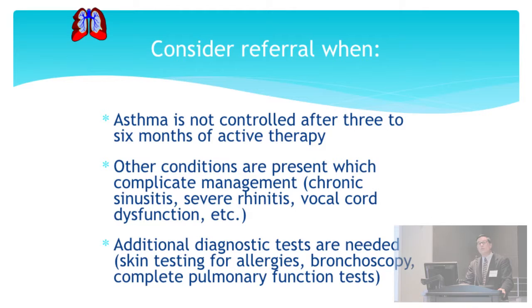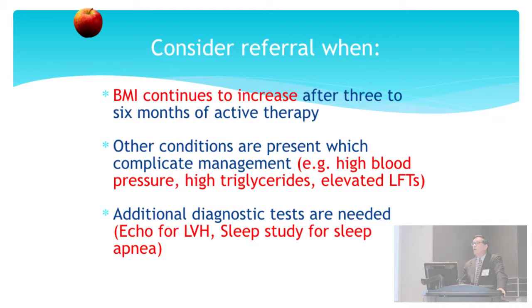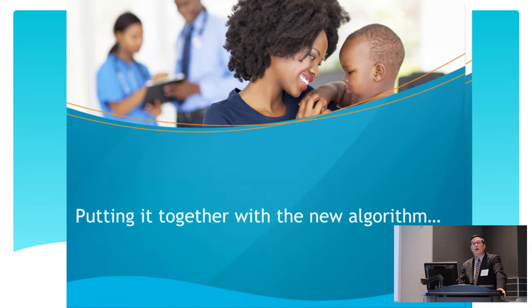A lot of similarities. We might consider referral for asthma if it's not under control, or if there are other complicating conditions like rhinitis or vocal cord dysfunction. Similarly, with obesity, we might need to consider referral if her BMI continues to increase, or if we're finding other conditions present. It really is very similar to other chronic diseases. It makes it a lot more doable when we think about obesity as a chronic illness.